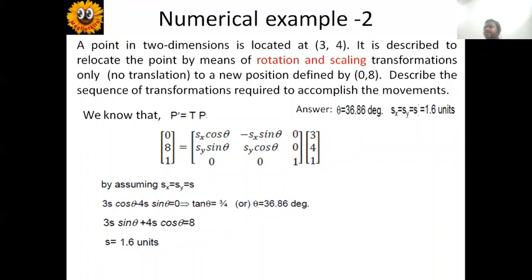The value of S equals 1.6 units. This is a straightforward problem — given the initial and final positions, we determine how to achieve the final position using rotation and scaling alone. This kind of problem is very common in robotics: when defining a robotic arm that must pick a component from one place and place it in another, the engineer designs how the manipulator moves — whether by translation alone or a combination of scaling, rotation, and translation. Such problems are used in solving robotic kinematics.